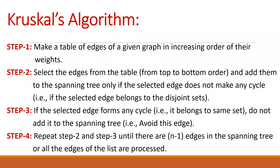Now let us see the steps of Kruskal's algorithm and how we perform them. In step one, we make a table or list of edges in increasing order of their weights — the smallest weight edge is first, the second largest weight is second, and so on. Then we select edges from the table from top to bottom: first we select the first edge, process it, then select the second edge, and so on until the list is exhausted.